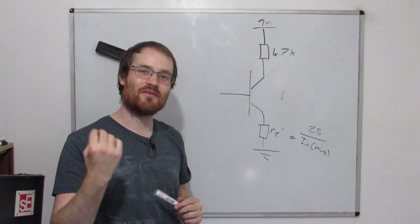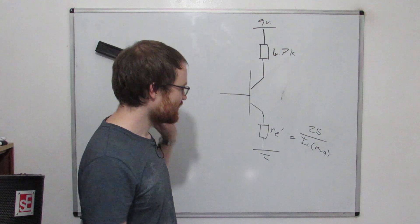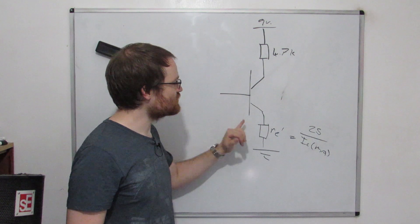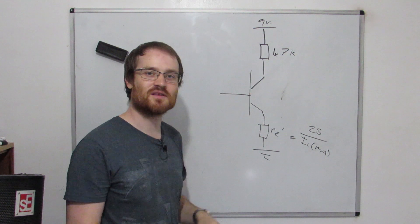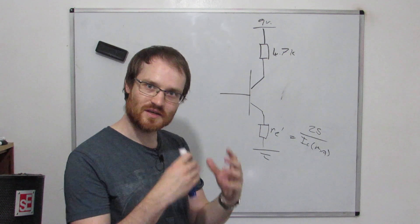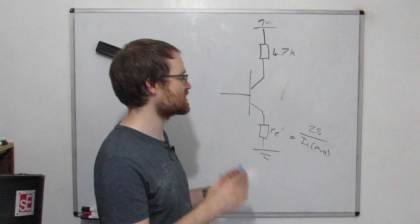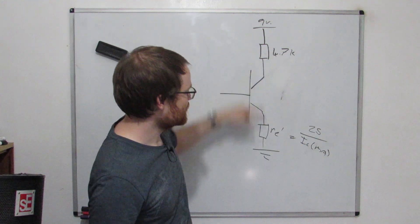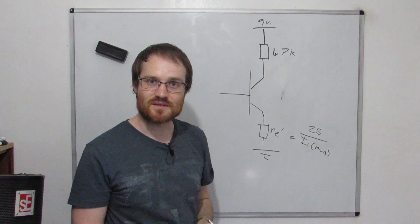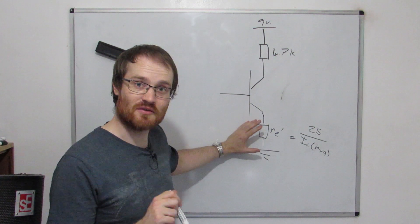What's going on here is that we're having complications because of this little RE prime that I told you about last time. This RE prime is a small resistance that appears in series with the emitter of a transistor. It's kind of complicated, it's because of the semiconductor device physics of the transistor itself. It's not an actual resistor but it looks like 25 divided by the collector current in milliamps.